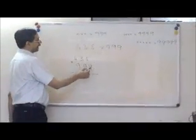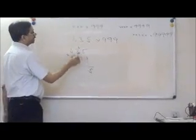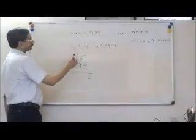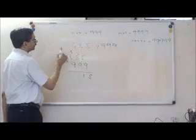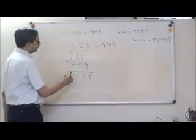We will multiply 9 into 5, 45, 4 carry. 9 into 3, 27, plus 4, 31, 1, 3 carry. 9 into 4, 36, plus 3, 31.